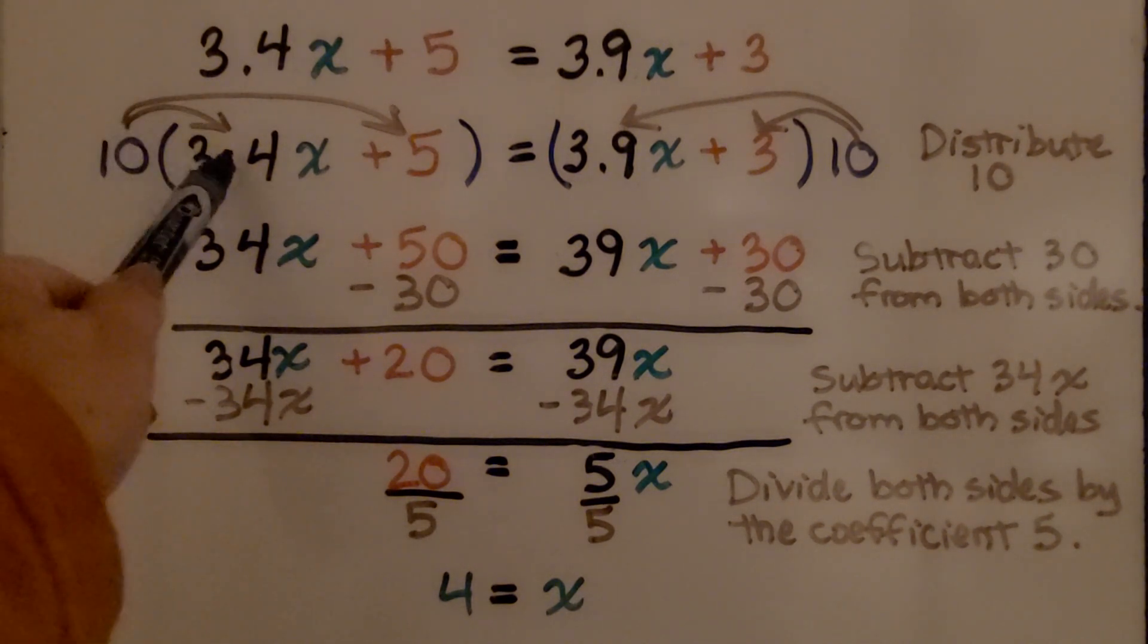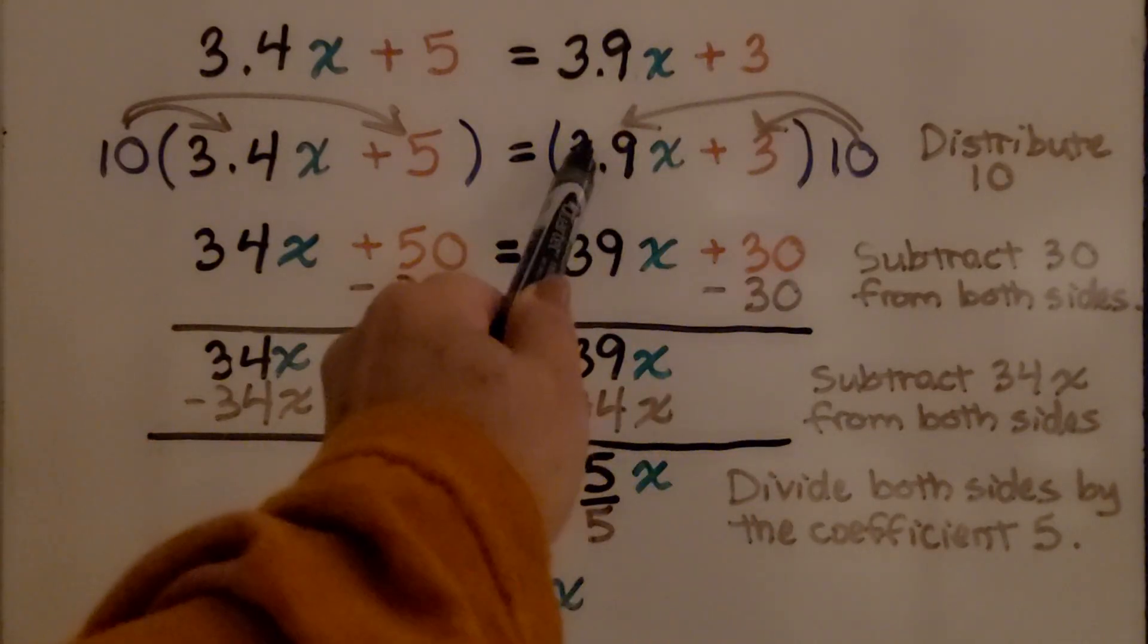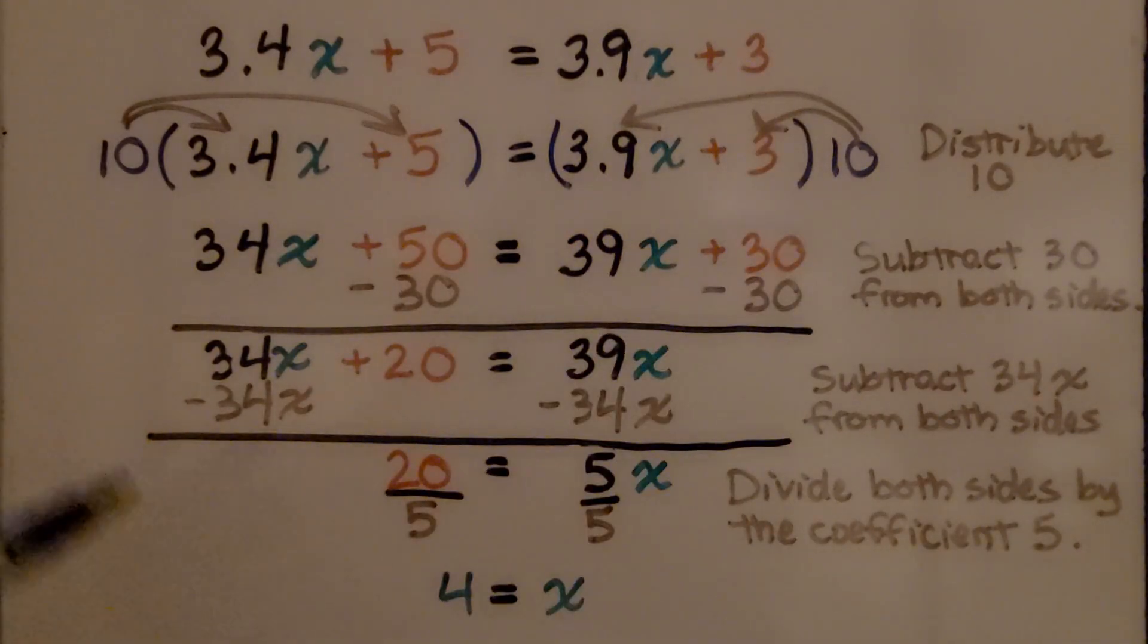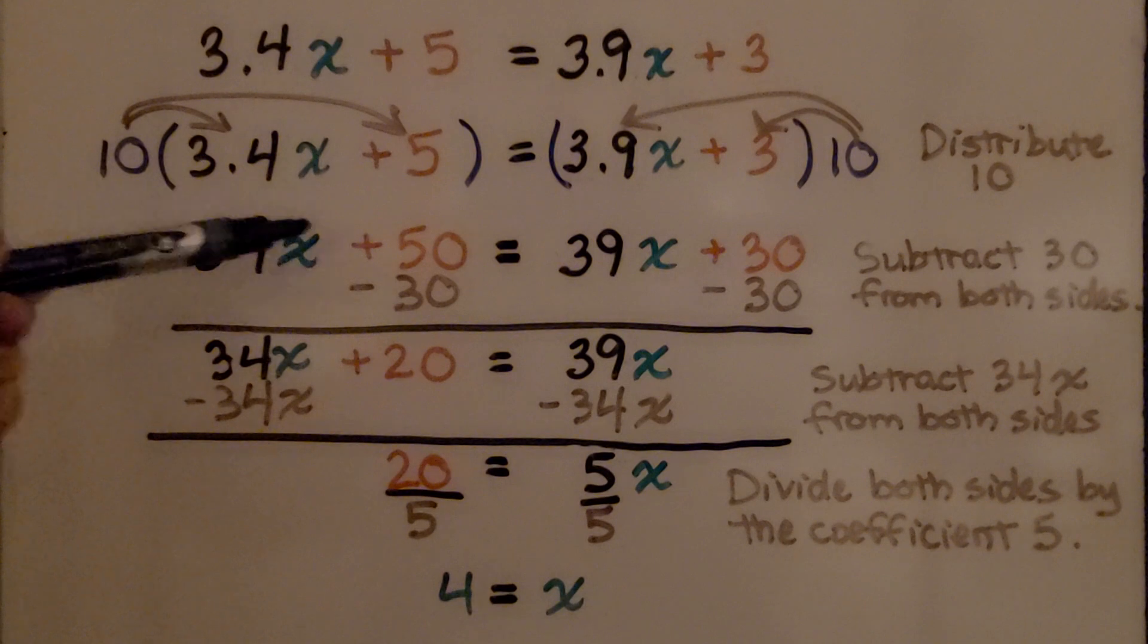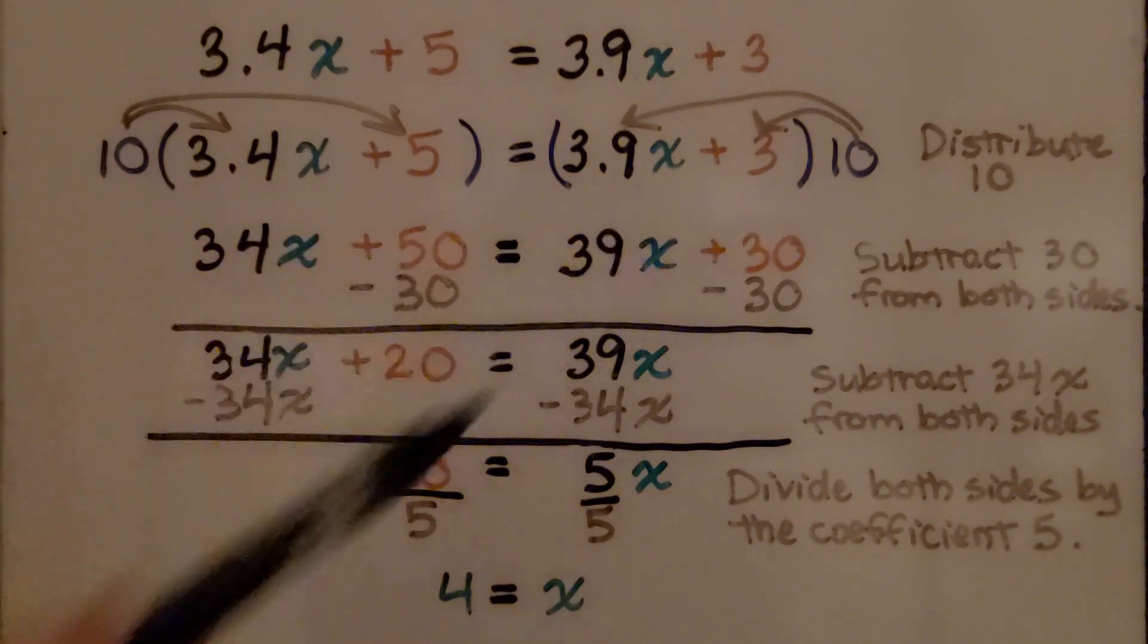We distribute the 10 to the 3.4 and to the 5, and distribute it to the 3.9 and the 3. We end up with 34x plus 50 equals 39x plus 30.